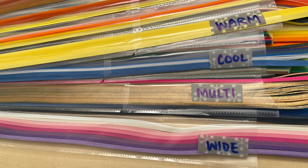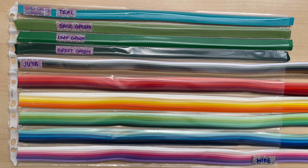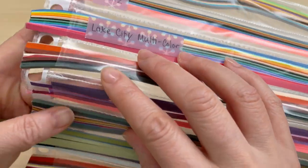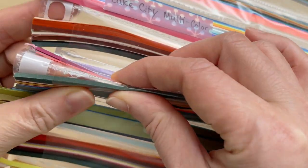I grouped colors into warm, cool, multicolor, and wider or thicker strips. The wider, thicker strips obviously needed more room, so there's less rows on this sheet. The clear plastic lets me find any color and check the width by turning the strips.